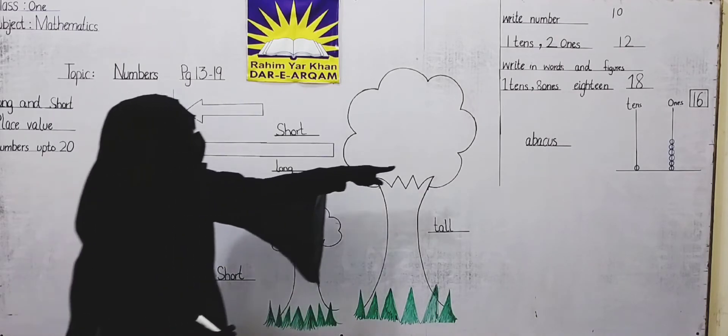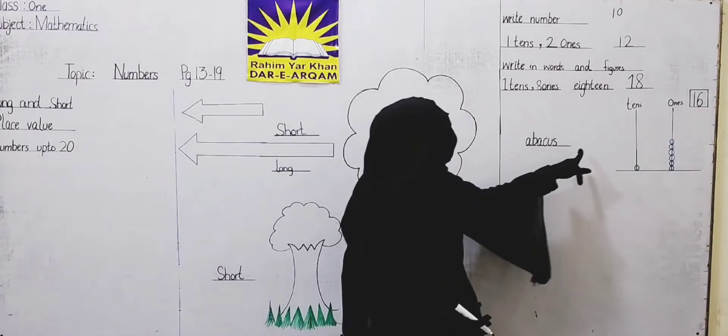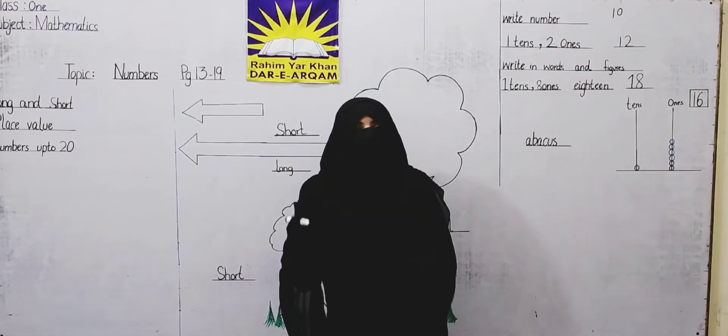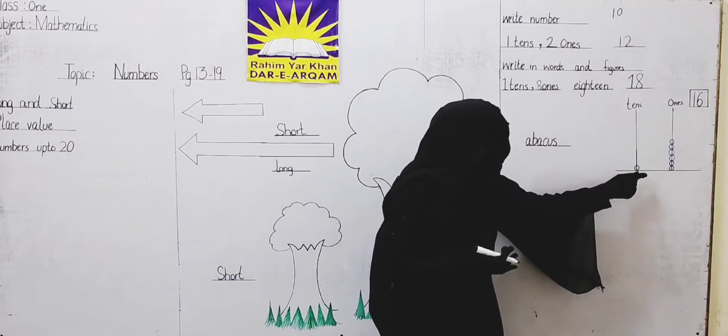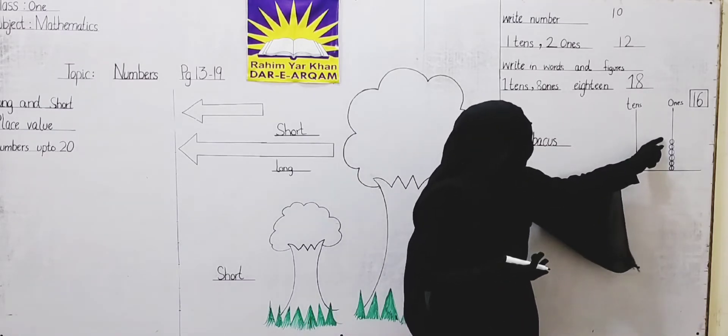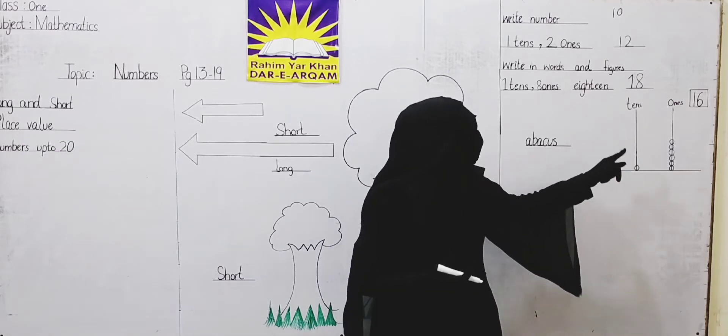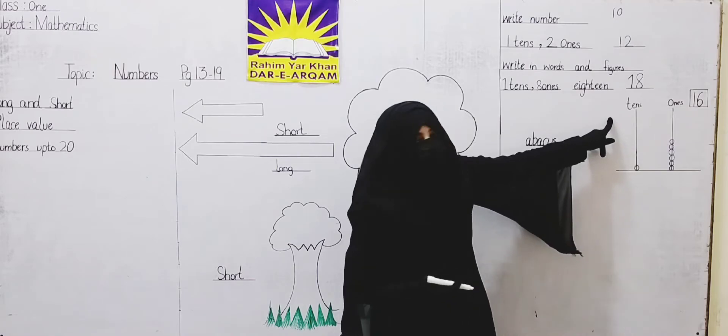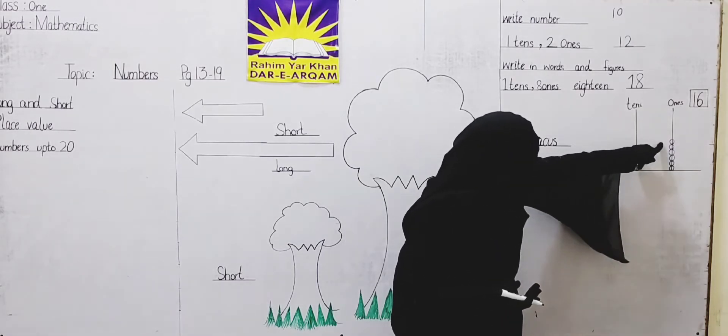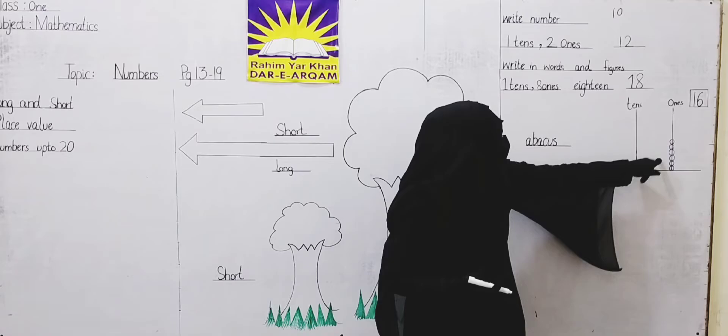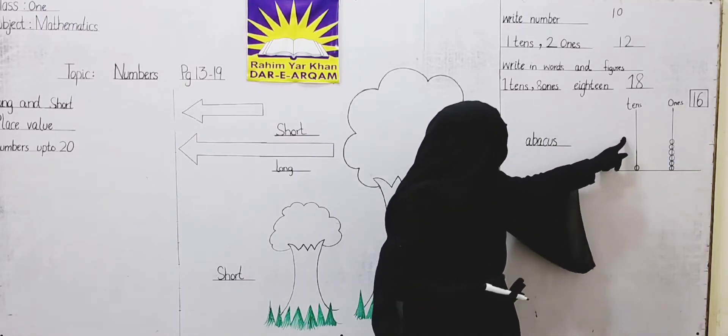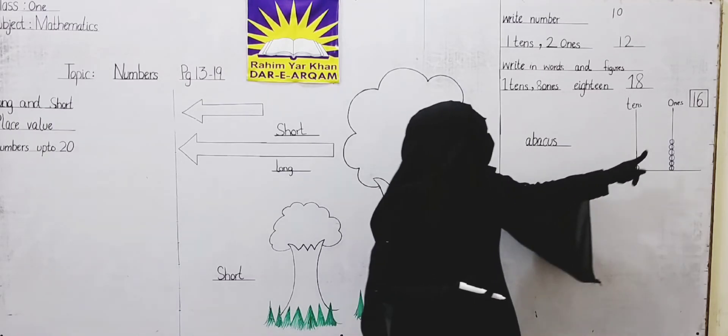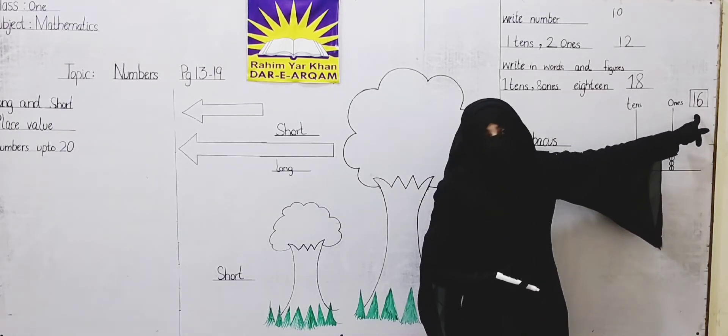Now we have abacus. Abacus, what is called? We have a frame of counting. We have made this one. We have small balls. We have two rods and small balls. For example, the first one is the ones and second one is the tens. Here we have small balls. We count the ones place. Then we see the second one. Here we count the ones place.